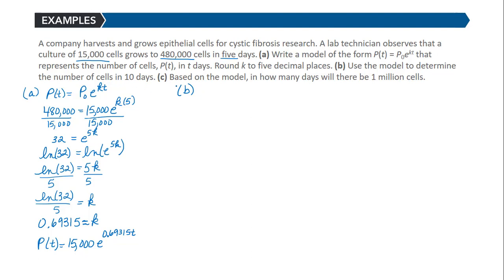For part B, we substitute t = 10. We can use our calculator to get that this is going to be 15,000 times e^(0.69315 × 10), which equals 15,360,433. That's the number of cells in 10 days.